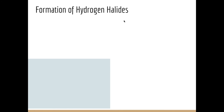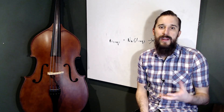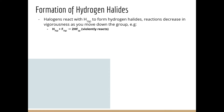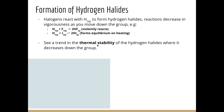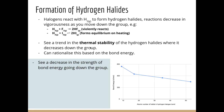Moving on to the formation of hydrogen halides: halogens react with hydrogen gas to form hydrogen halides, and these reactions decrease in vigorousness as we move down the group. For example, hydrogen and fluorine undergo a very violent reaction, whereas hydrogen and iodine only form an equilibrium on heating. We also see a trend in the thermal stability of hydrogen halides, which decreases going down the group, rationalized by decreasing bond energy — from HF to HCl, HBr, and HI, the bond energy becomes progressively weaker.